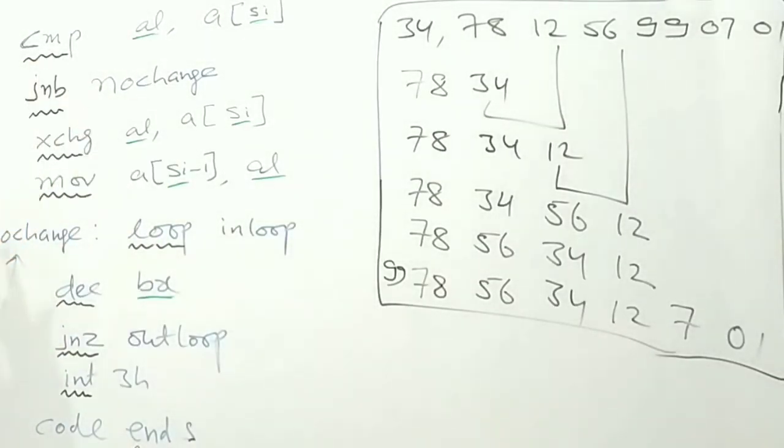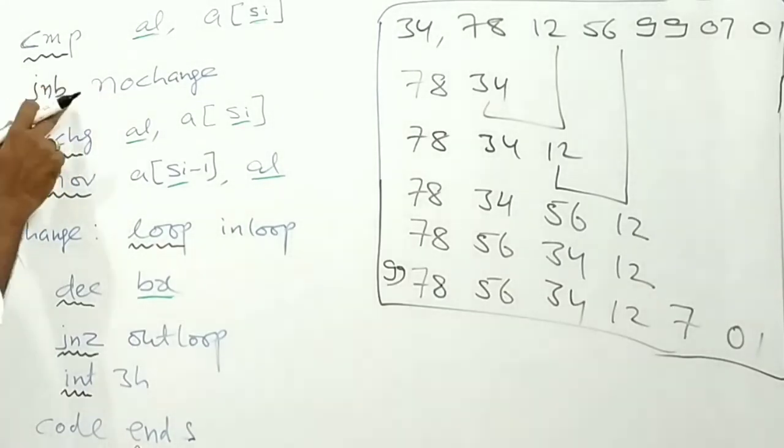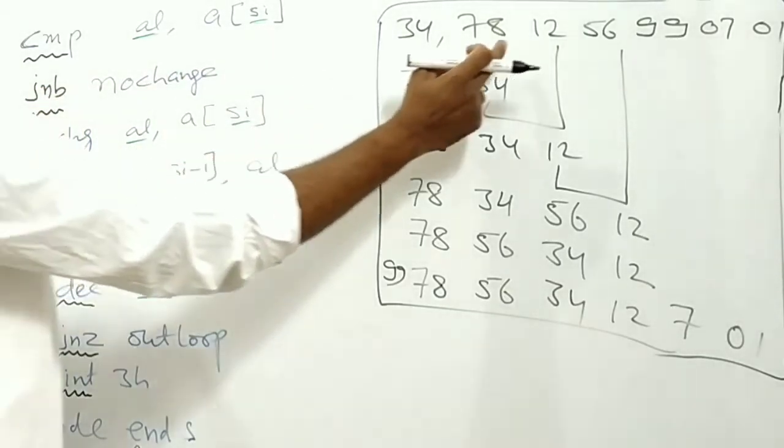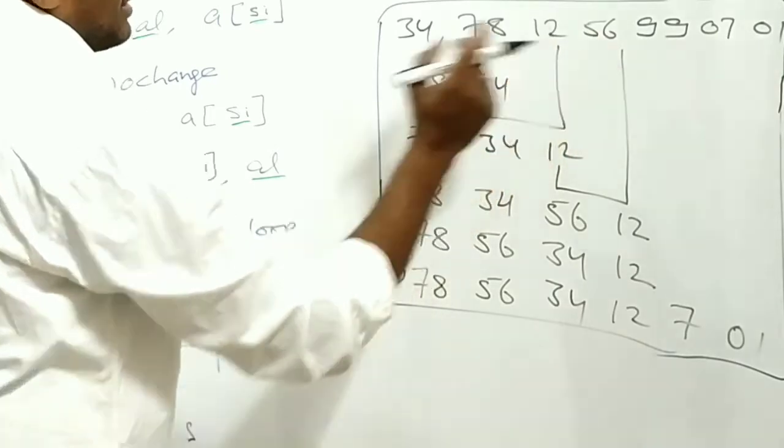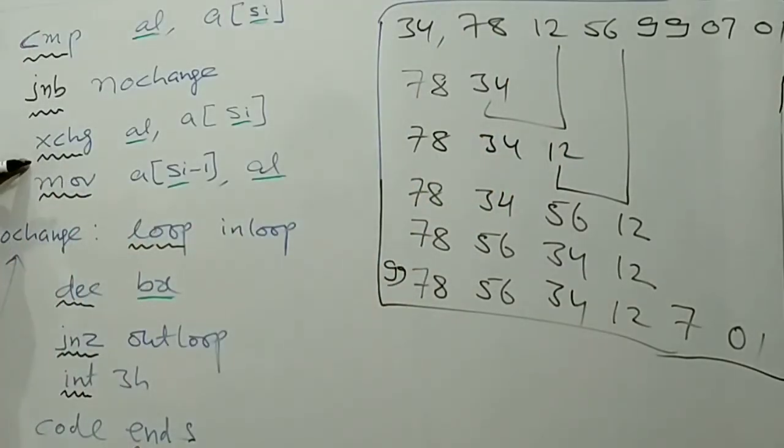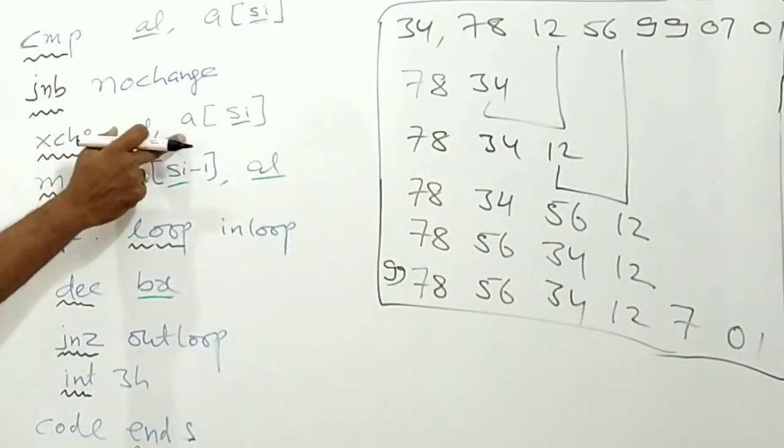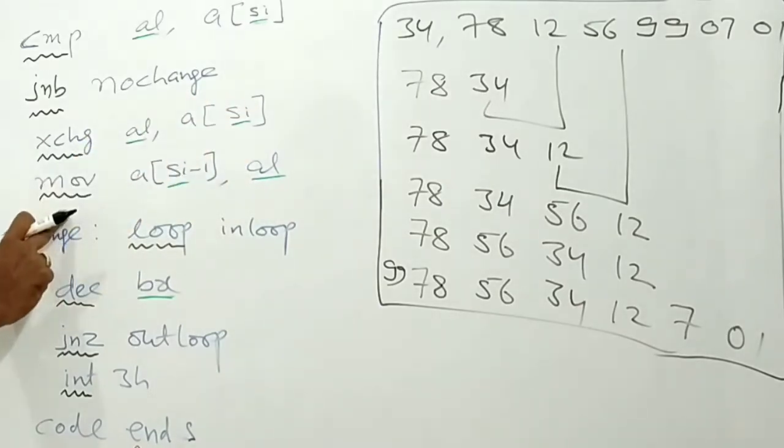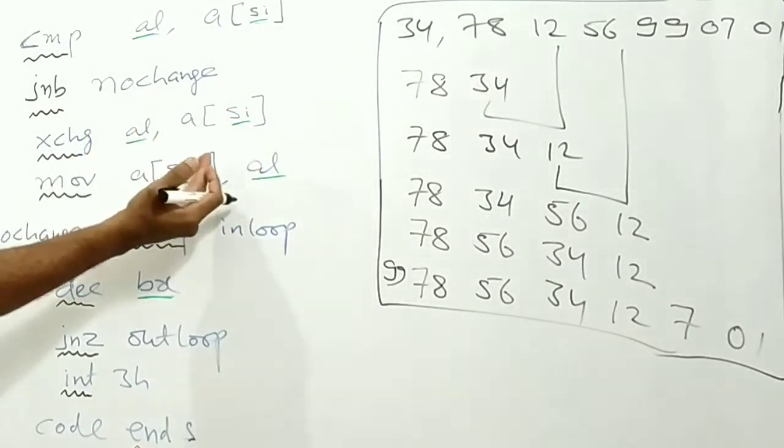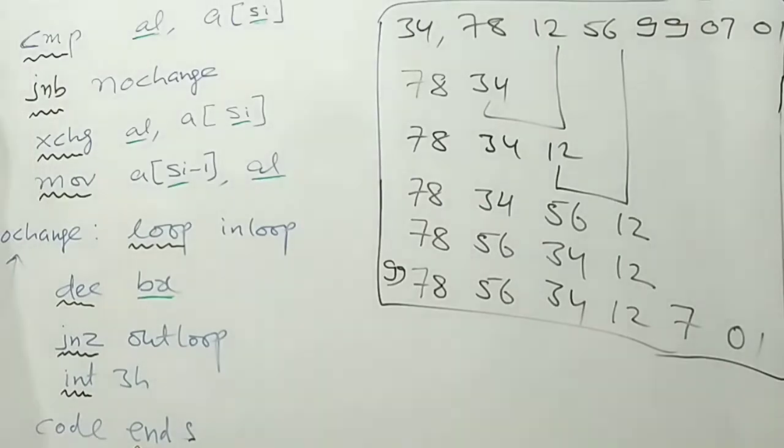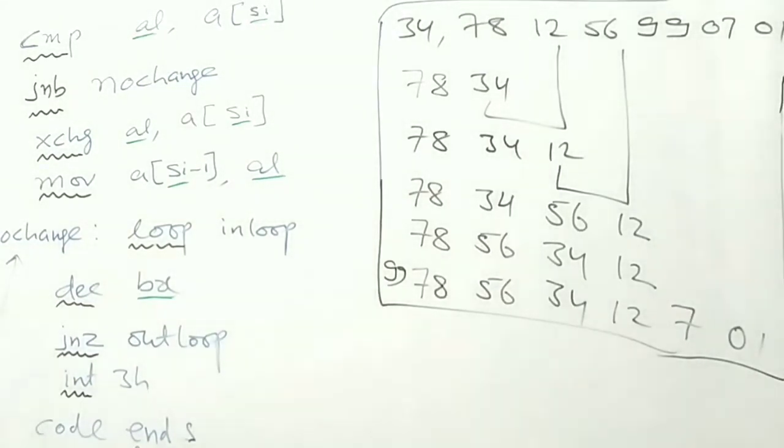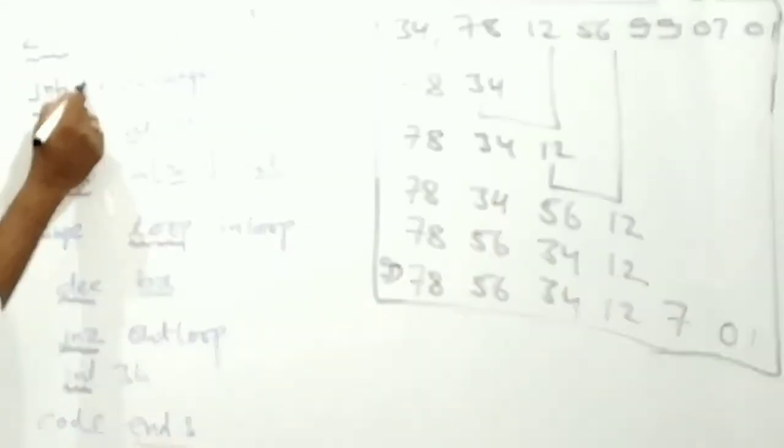Wait, it not completes. Now if this condition is not satisfied, that is if the numbers are in ascending order instead of descending order, then it will do exchange. Exchange of AL comma A of SI. Then again I am moving that number into the previous location, then where the SI is currently pointing. So like that the numbers will be arranged either in ascending order or descending order depending upon this logic.